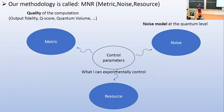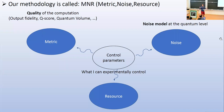The core of this work is based on a methodology that we call MNR, for Metric-Noise-Resource. The resource is the thing you want to minimize, but you need other things in your model. You need a precise model of the noise occurring at the physical level for your qubits — basically an open system master equation. And you need a metric, which quantifies how good your computation was — the simplest example being the fidelity of the output state. You also have control parameters that experimentalists can tune, which simultaneously modify the resource, the noise, and the metric.